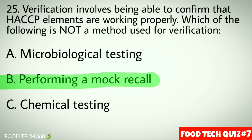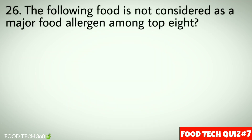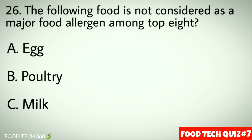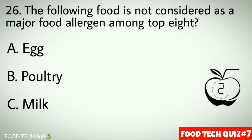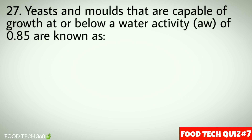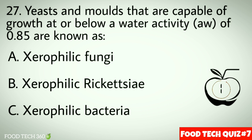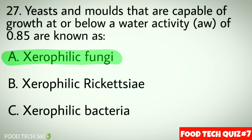Question number 26: The following food is not considered a major food allergen among the top eight — options: a) Egg, b) Poultry, c) Milk. Correct answer: b) Poultry. Question number 27: Yeast and molds that are capable of growth at or below a water activity of 0.85 are known as — options: a) Xerophilic fungi, b) Xerophilic rickettsia, c) Xerophilic bacteria. Correct answer: a) Xerophilic fungi.